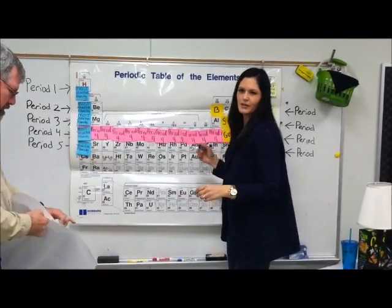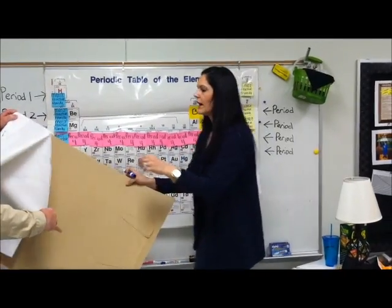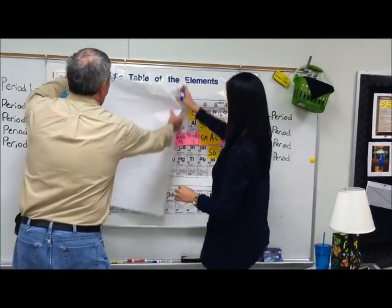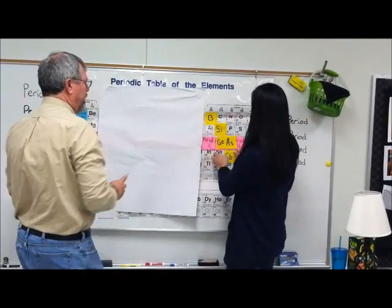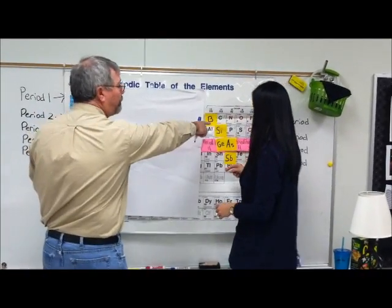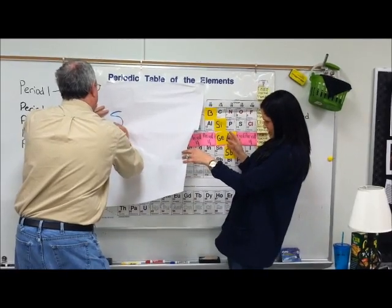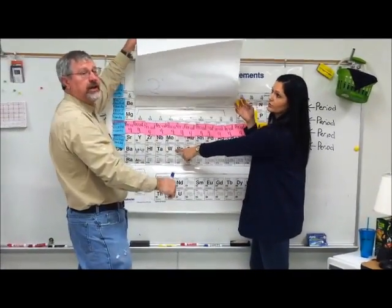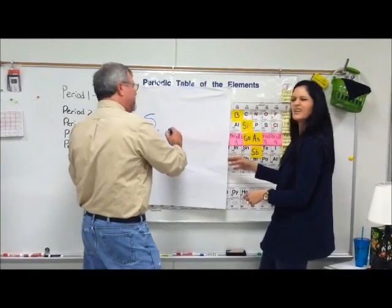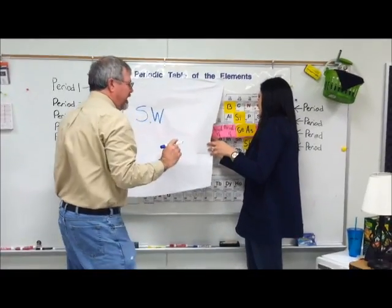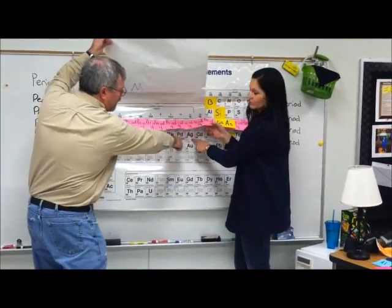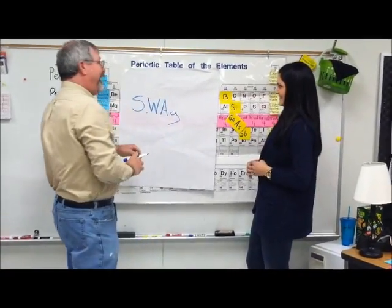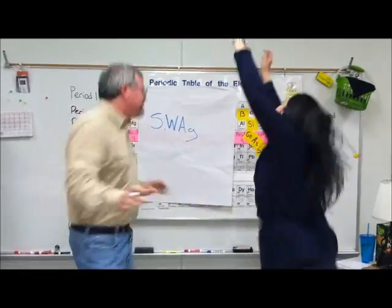What would happen if we put some of these elements together and made compounds out of them? Let's see what compounds we can make. We've got sulfur — that's S — plus tungsten, which is W. Remember how we said the symbol sometimes doesn't match? Tungsten is W. And then we add silver, which is Ag. So what does that give us? Swag!